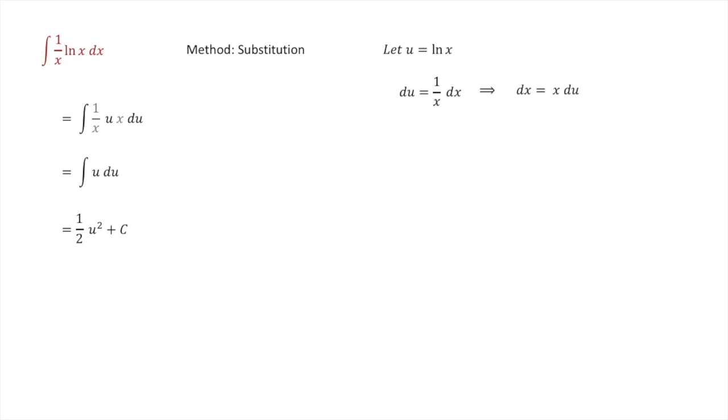Now we want to substitute the u back in to be back in terms of the original variable x. So our final solution is 1 half ln squared x plus the integration constant c.